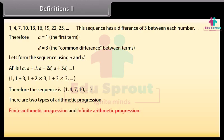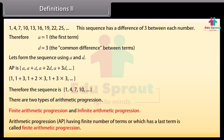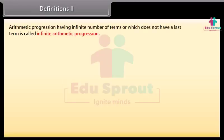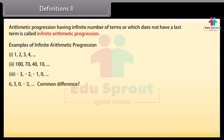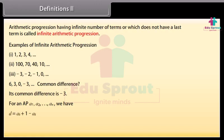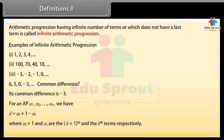The arithmetic progression having infinite number of terms, or which does not have a last term, is called infinite arithmetic progression. Here are some examples of infinite arithmetic progressions. Look at this sequence — can you tell its common difference? Its common difference is minus 3. In general, for an AP A1, A2 and so on till AN, we have D as AK plus 1 minus AK, where AK plus 1 and AK are the (K+1)th and the Kth terms respectively.